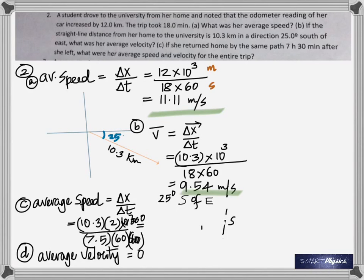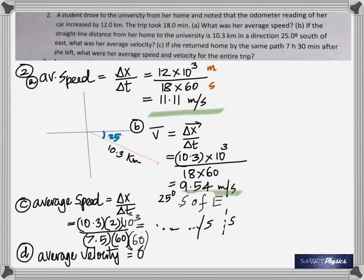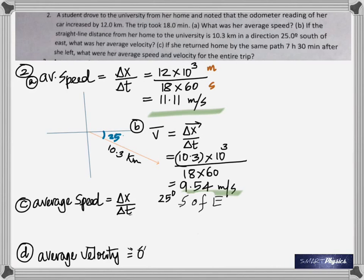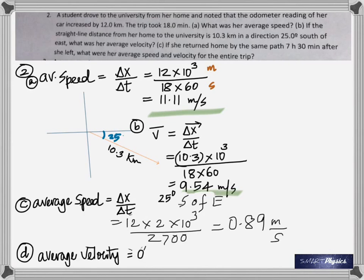The average velocity is zero because she returns. Considering significant figures, that's 0.76 meter per second — actually, let me redo that. The answer should be 0.89 meter per second, because she is returning by the route she took which was 12 kilometers, not 10.3. That's why I had to change the answer.